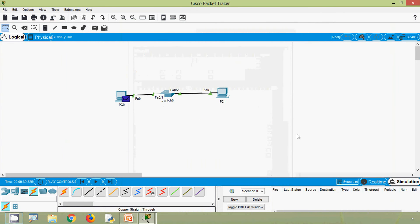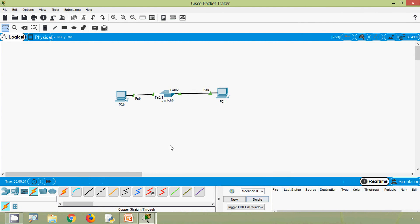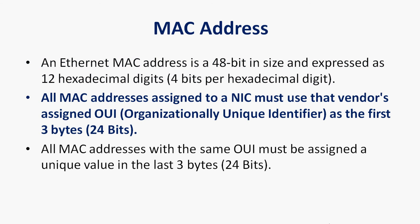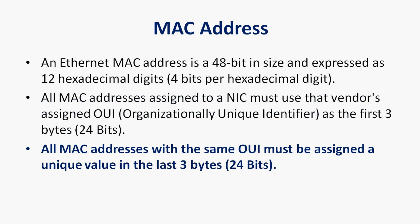Now we will look at MAC addresses. An Ethernet MAC address is 48 bits in size and expressed as 12 hexadecimal digits. All MAC addresses assigned to a NIC must use that vendor's assigned OUI (Organizationally Unique Identifier) as the first three bytes — that is 24 bits. All MAC addresses with the same OUI must be assigned a unique value in the last three bytes — the last 24 bits.